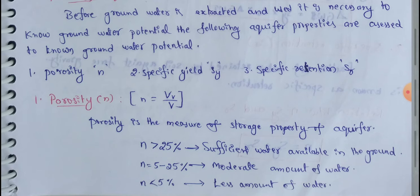Aquifers have a storage property. There are three categories based on porosity value. When porosity is greater than 25%, that means sufficient water is available in the ground — whether in unconfined aquifers or confined aquifers. In that ground area, a porosity value greater than 25% means the storage capacity is high, with very high amounts of water available.